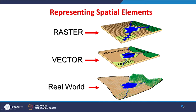Raster means we have data in grid form, and rasters are of 2 types whereas vectors are of 3 types. The real world, as you can see here, if I want to convert into vector, then there are 3 entities — which we will also see in detail — that are point, line or polyline, and polygon. Through these we can have a representation of the real world in the vector domain.